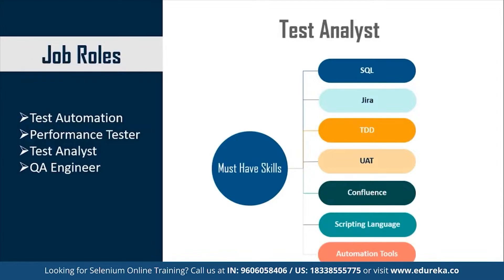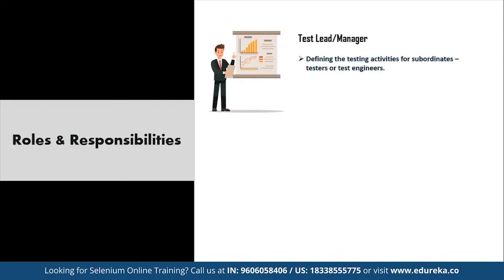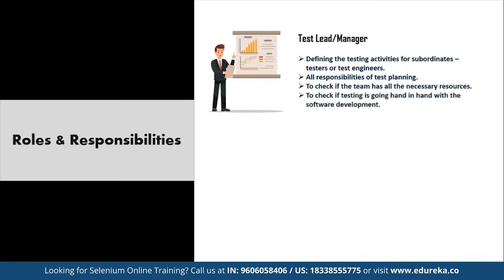Now let's look at the roles and responsibilities of a testing automation engineer. In software testing, every company defines its own hierarchy, roles, and responsibilities, but broadly there are two levels. The first is the test lead or manager. A test lead is responsible for defining testing activities for subordinates, all responsibilities of test planning, checking if the team has the necessary resources, checking if testing goes hand-in-hand with software development, and preparing status reports of testing activities, including interactions with customers and updating the project manager regularly.